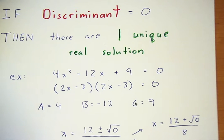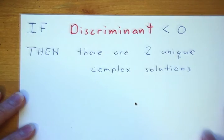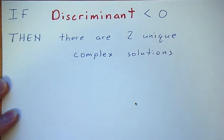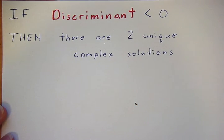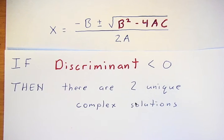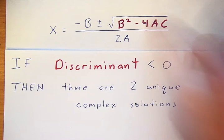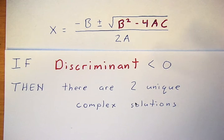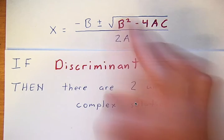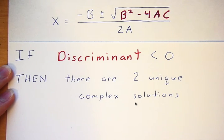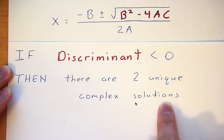We've looked at discriminant greater than 0 and equal to 0. Now let's look at when the discriminant is less than 0. If the stuff underneath the square root is less than zero, you end up taking the square root of a negative number, which gives you an imaginary result.